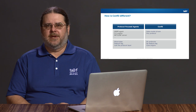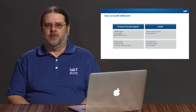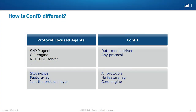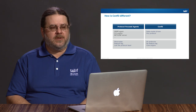Then ConfD automates that data model in order to save you writing lots of code. Your code that you write is instrumentation to ConfD simply in terms of the data model, and that common instrumentation is used across all of the northbound interfaces by ConfD. This easily allows you to quickly support new management protocols, react to market changes, and not have feature lag between your management interfaces. The core engine of ConfD does that automation and runs transactions.